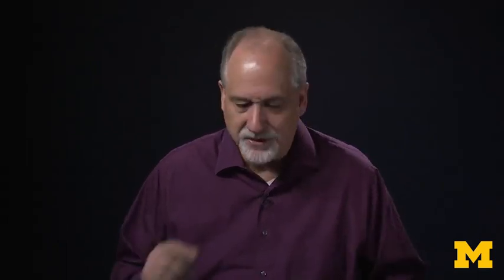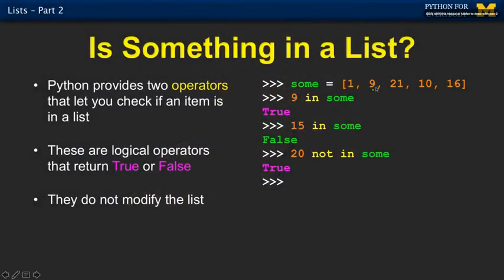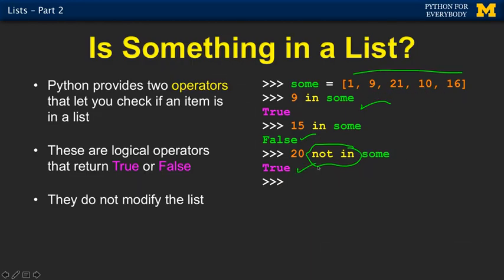And again, one of my favorite Python operators is in. In strings, you were asking if a character or a substring was in another string. Here, now you're looking at the members of a list and you're saying, is 9 somewhere in the list? Yes, it is. Is 15 somewhere in the list? No, it is not. And then not in is also an operator. It's the opposite of in. So is 20 not in the list? And the answer is 20 is not in the list, so we get back true.